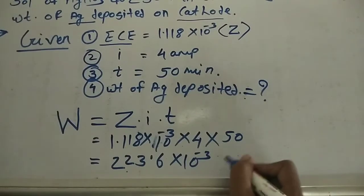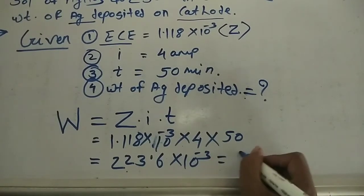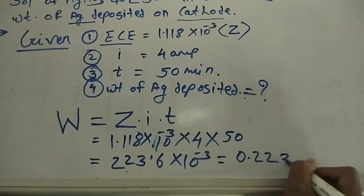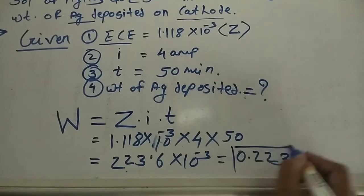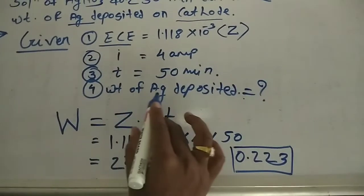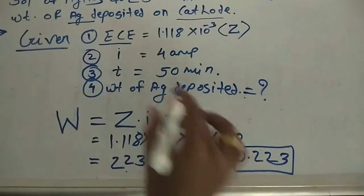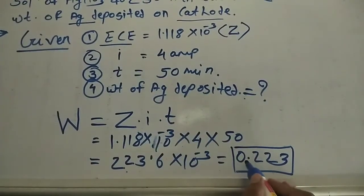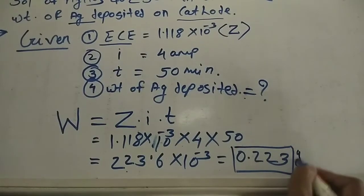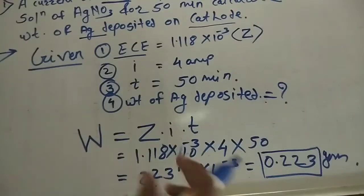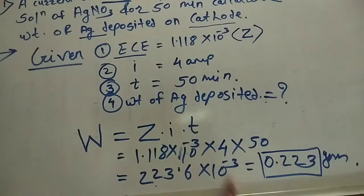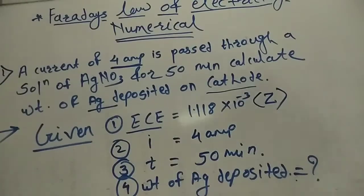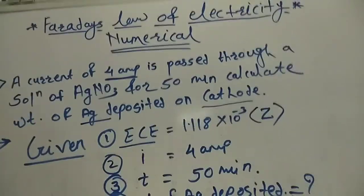After simplifying, the weight of silver deposited is 0.223 gram. This is a well-known example based on Faraday's law of electricity.